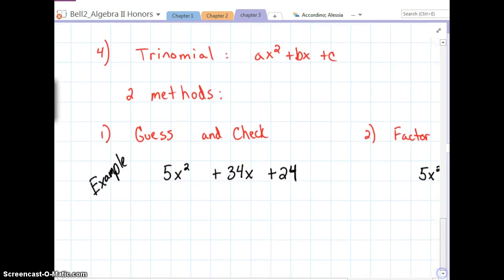Now, it gets slightly more difficult when the trinomial has an a value other than 1. And there's two methods you can do with this. One is simply guess and check. We can sit here and play with the numbers that multiply to 5. Well, there's only two options. It has to be 1 and 5. So 5x and 1x.